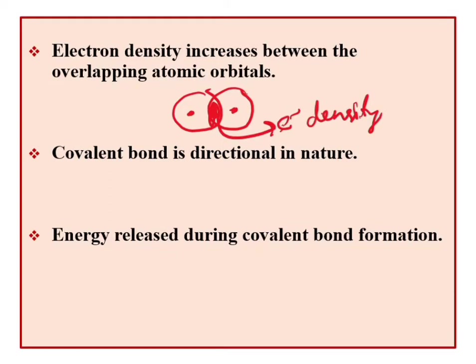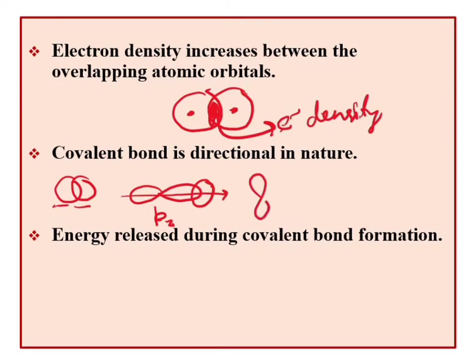The covalent bond is directional in nature. In the case of S-S orbital overlap, bonds are not highly directional. But P-orbitals are directional — for example, Pz orbital forms bonds along the Z-axis. Since P-orbitals like Px, Py, and Pz are directional in nature, the covalent bonds formed are also directional.